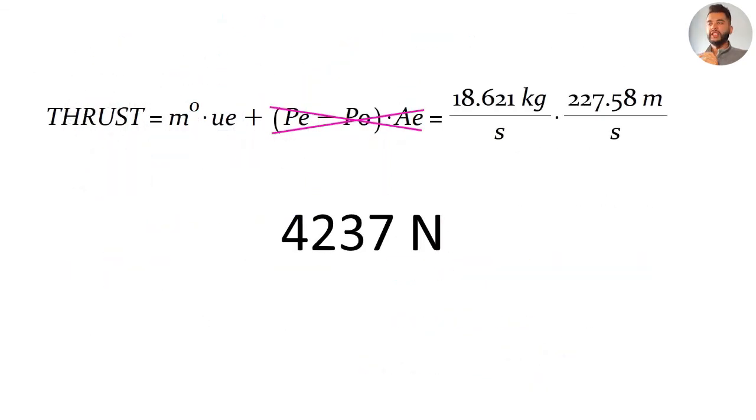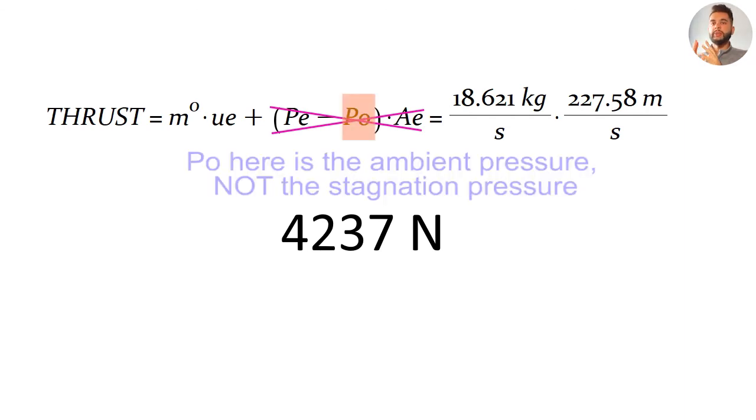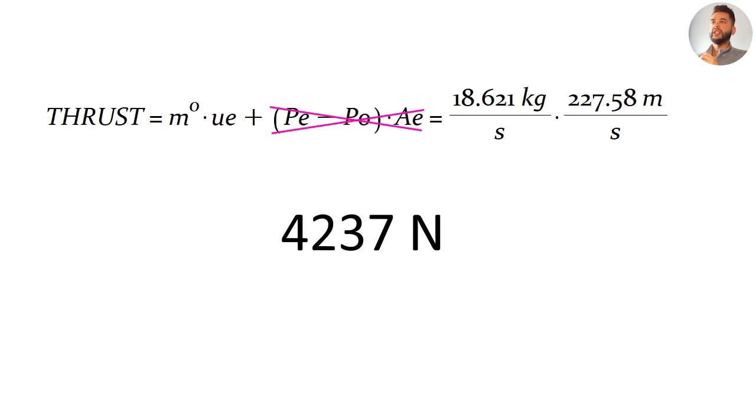The formula for the force equals M dot times UE plus PE minus P naught times AE. In my MATLAB algorithm, I assume that the normal shock tries to maintain pressure equilibrium which means that the exit pressure and the ambient pressure can be assumed the same. In actuality, this may not be always true. You have to perform a sort of experiment but this is quite a good conservative assumption. So that term will cancel out and you have the force equals M dot times UE very simply which is 18.621 times 227.58. So that's it for the answer.